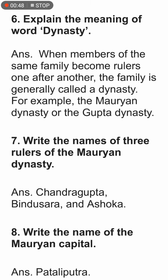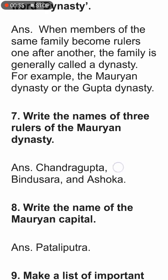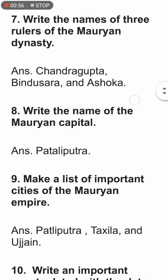Explain the word 'dynasty.' When the members of the same family become rulers one after another, that family is known as a dynasty. For example, the Maurya dynasty or the Gupta dynasty.